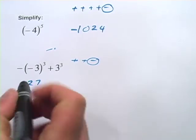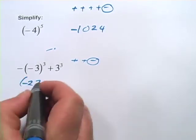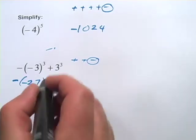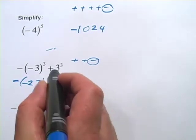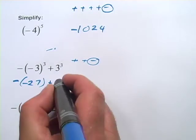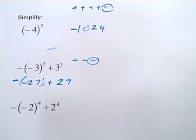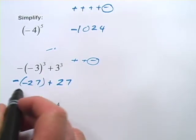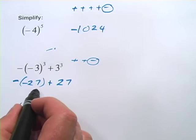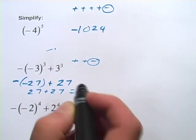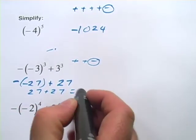But I've only done what's in the parentheses so far, so let me put in the rest of the problem. There's a negative sign out in front of the parentheses. And 3 to the third power is just 27 — no negative signs involved. So we've got negative negative 27 plus 27. A negative negative 27 is 27, and 27 plus 27 is 54.